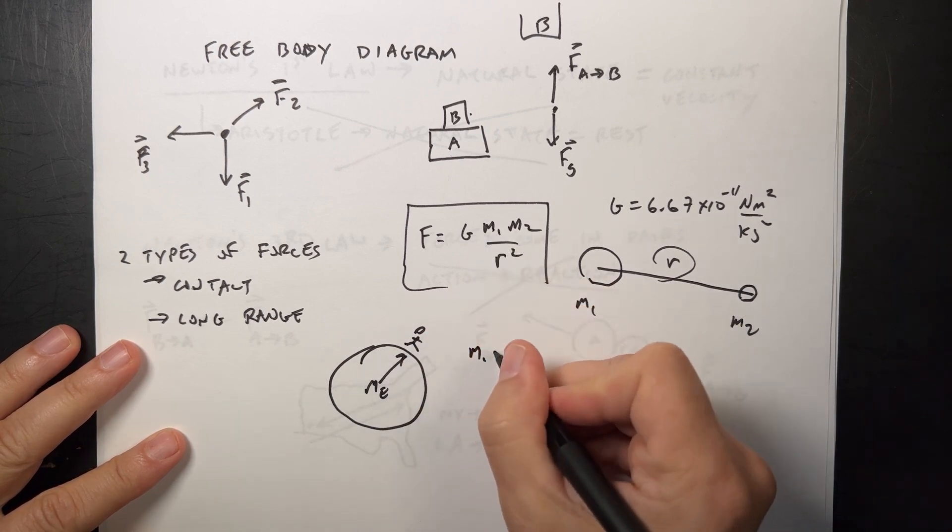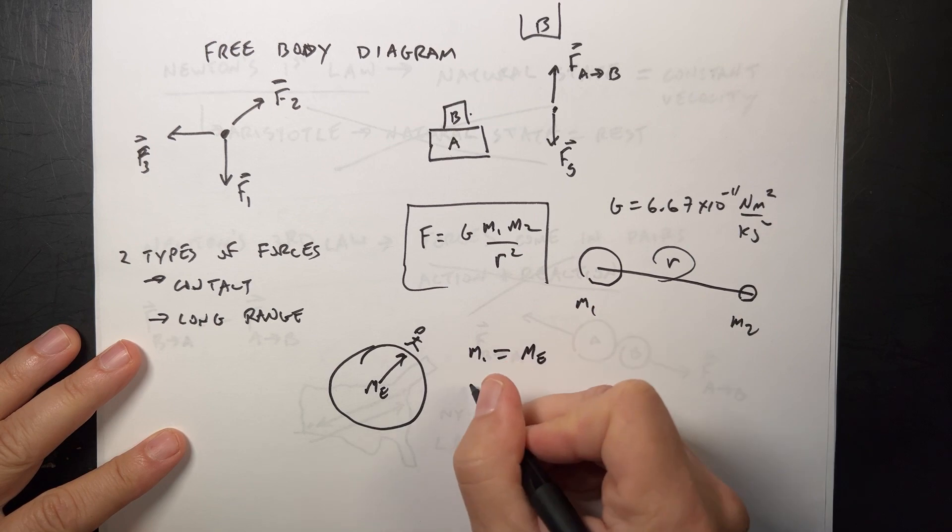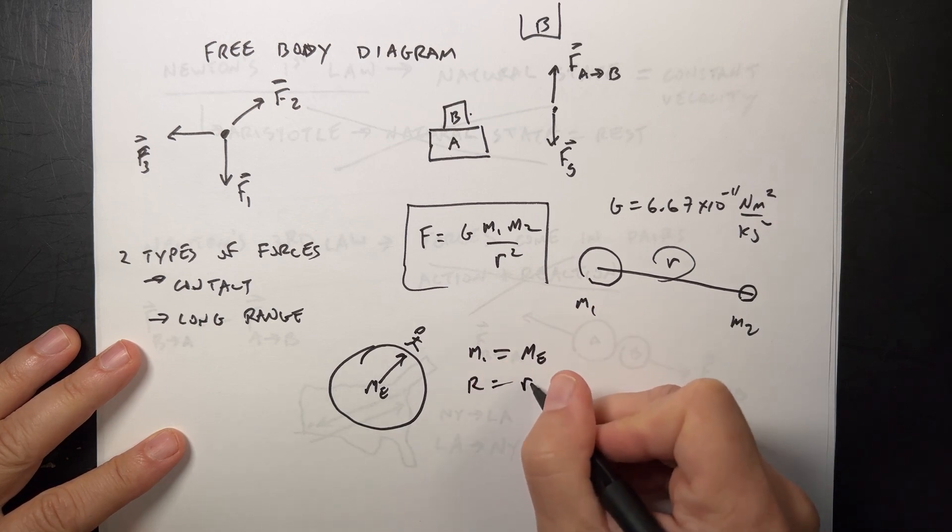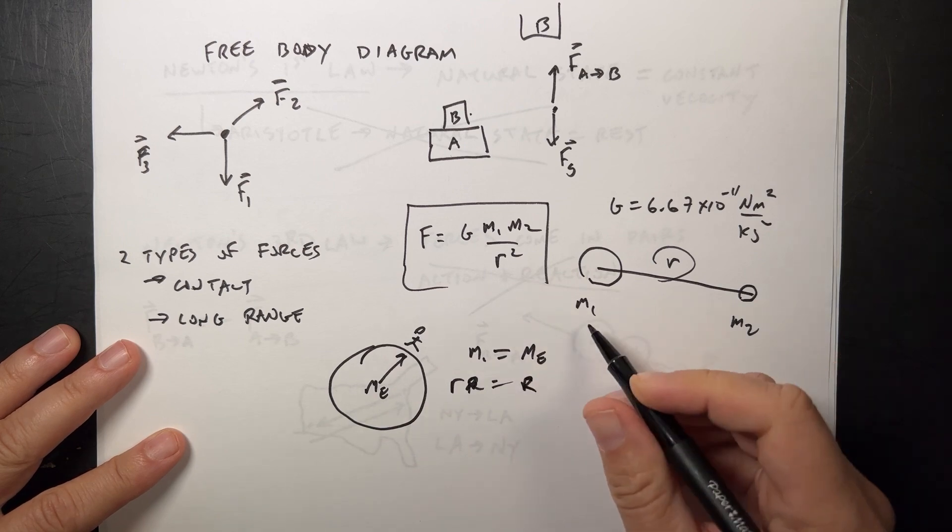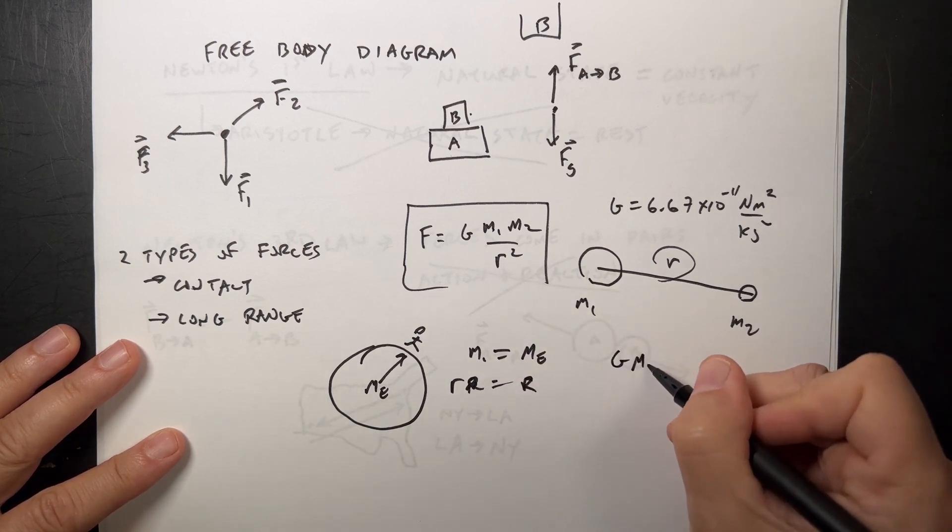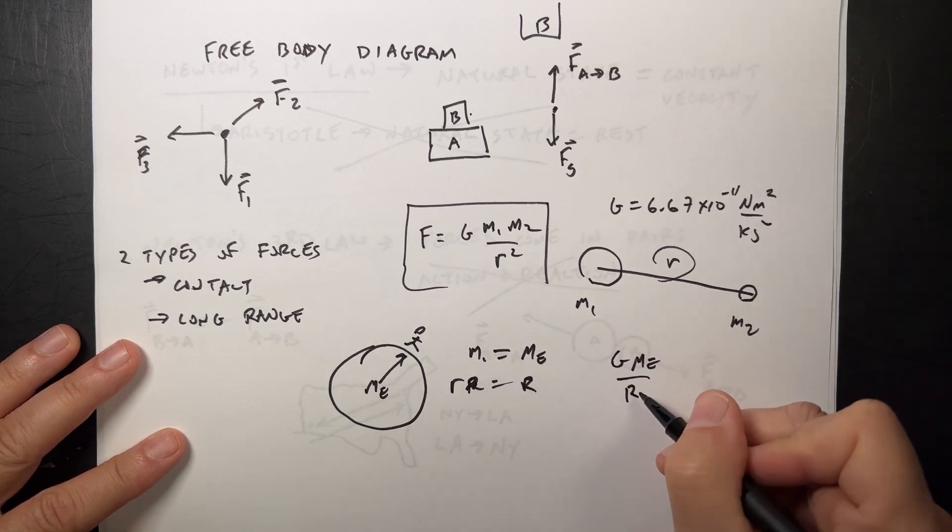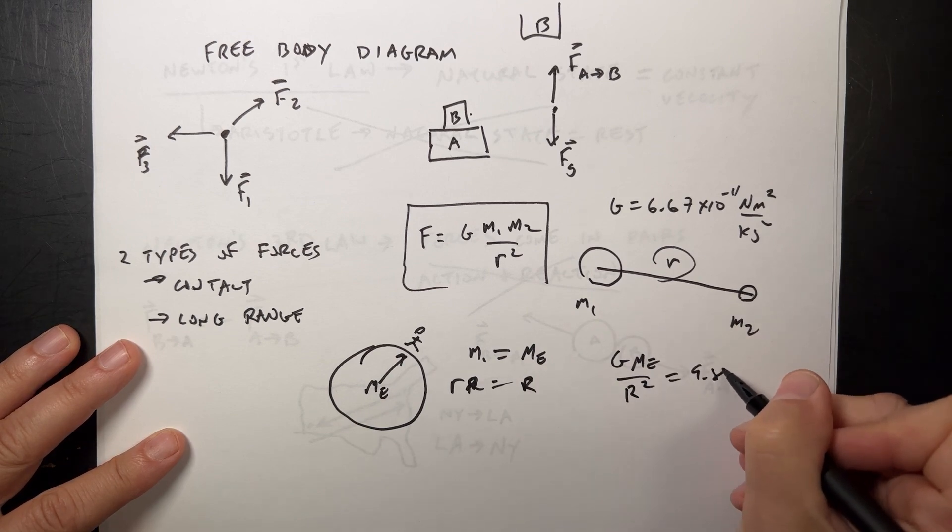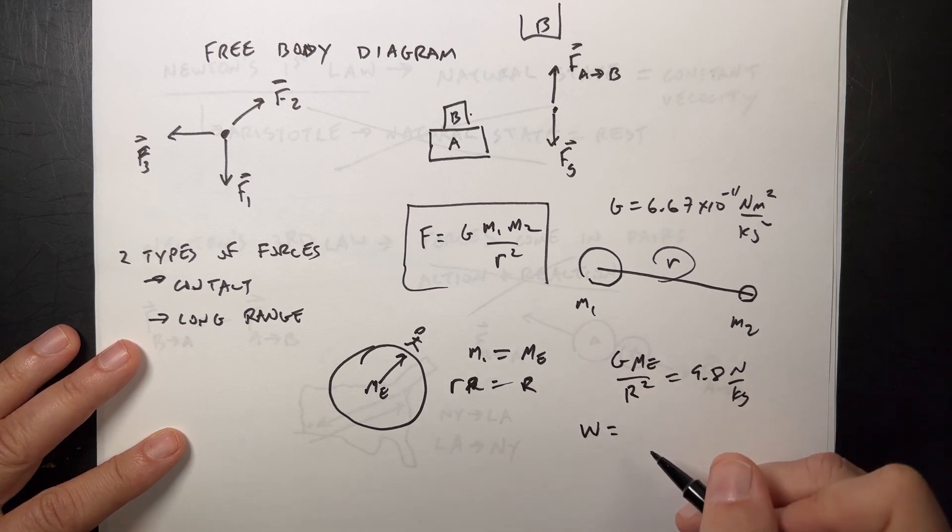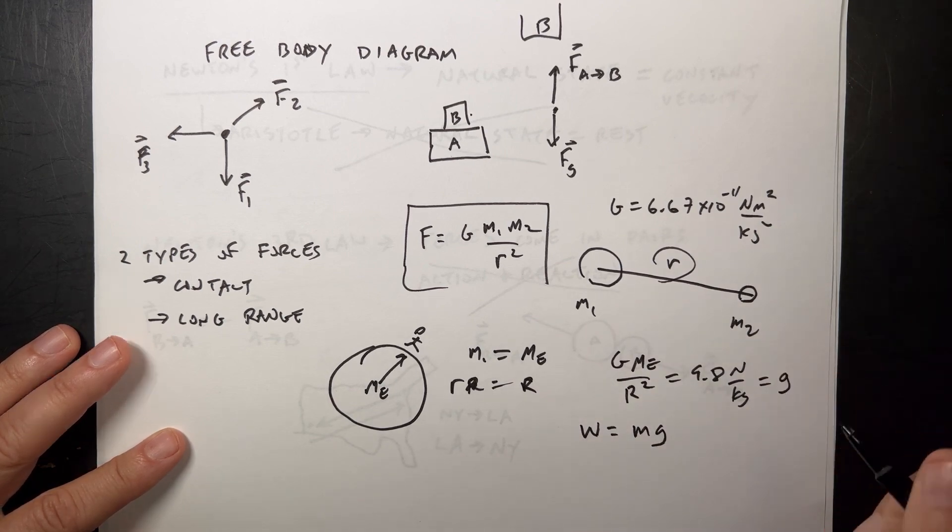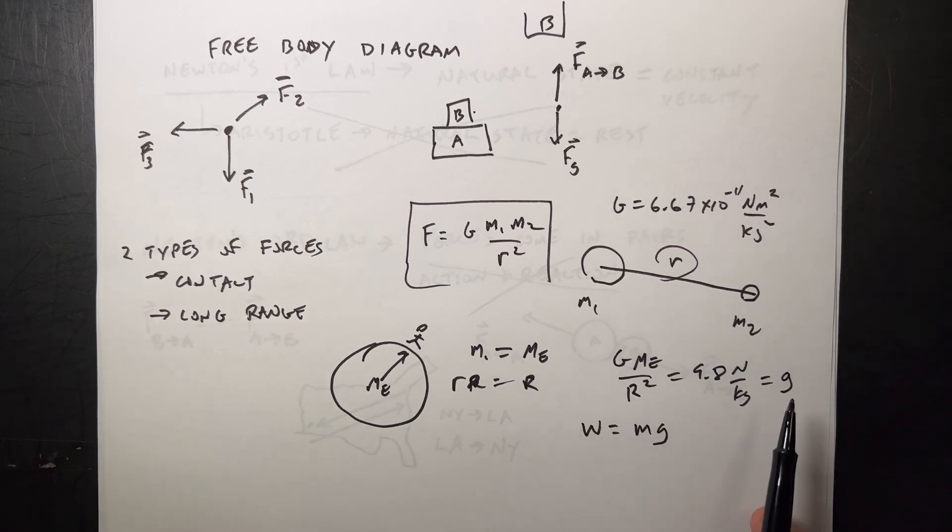If you put the earth as one of the objects with the radius of the earth and a person standing on the surface, if M1 is the mass of the earth and R is the radius of the earth, then G mass of the earth over R squared equals 9.8 Newtons per kilogram. We can write the weight, the magnitude of the weight, as just MG and we'll call that little g - the local gravitational constant or gravitational field.